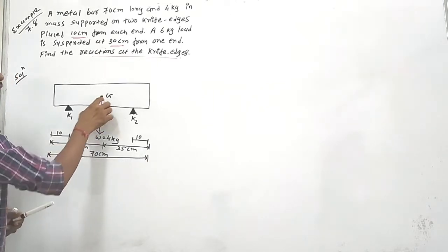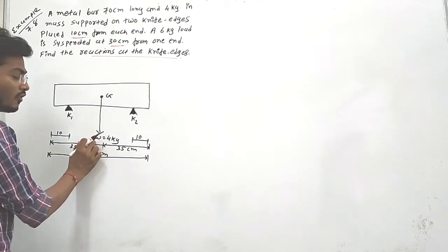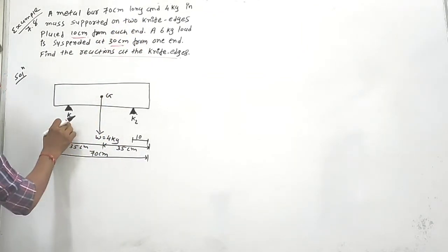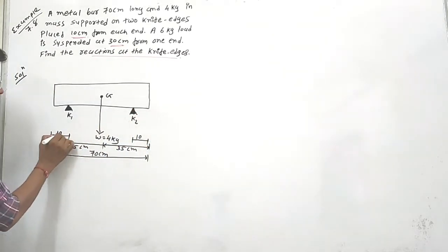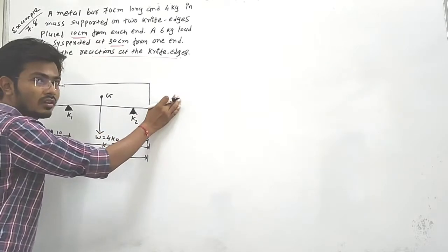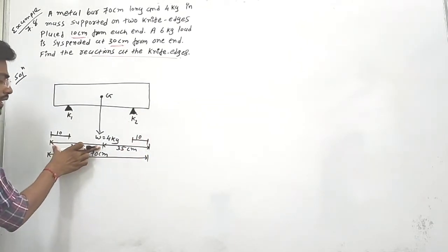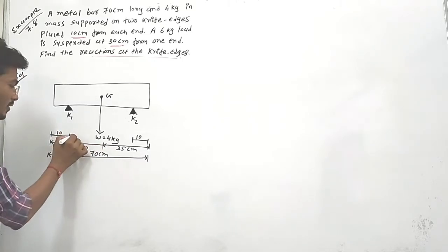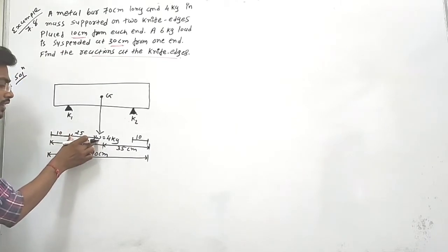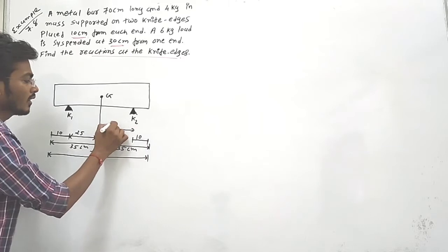The bar is 70 cm long, so the center point G is at 35 cm. The two knife edges K1 and K2 are placed 10 cm from each end — so this side is 10 cm and this side is also 10 cm. The distance from each knife edge to the center G is 35 cm.